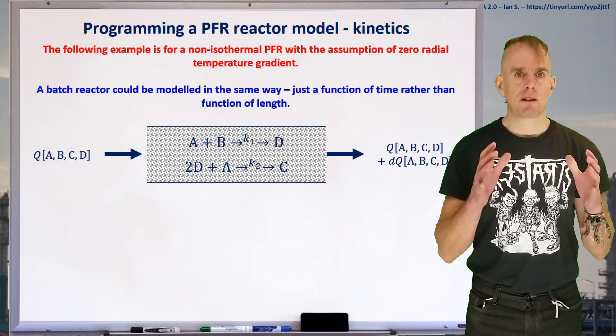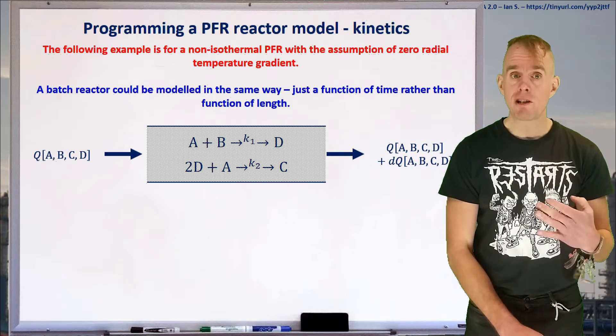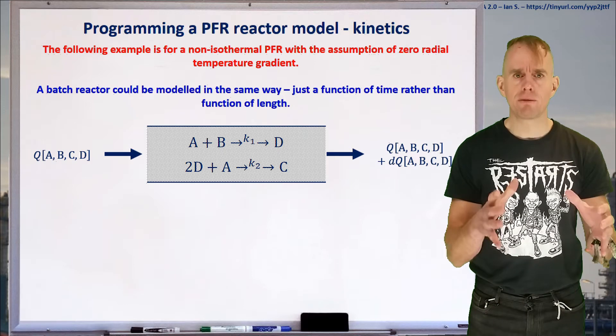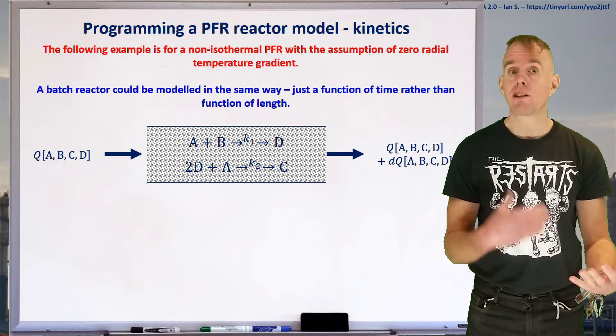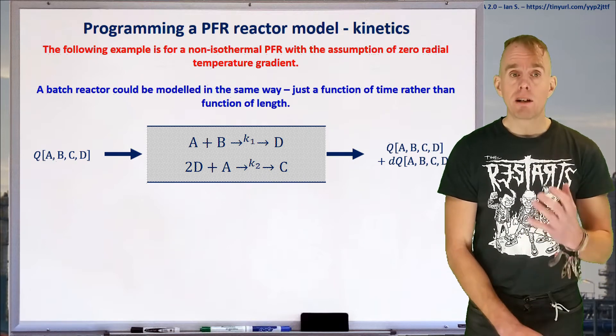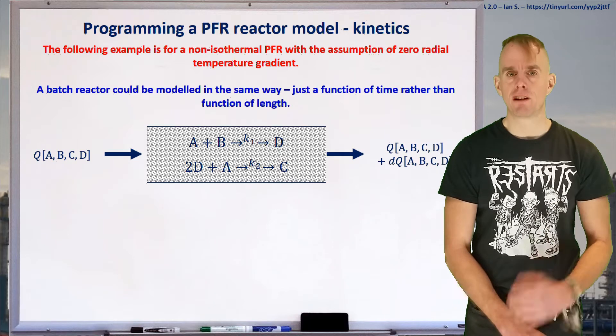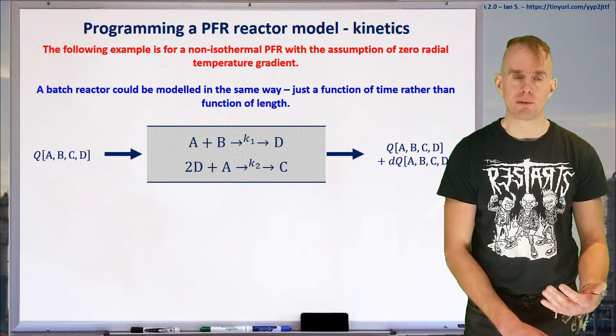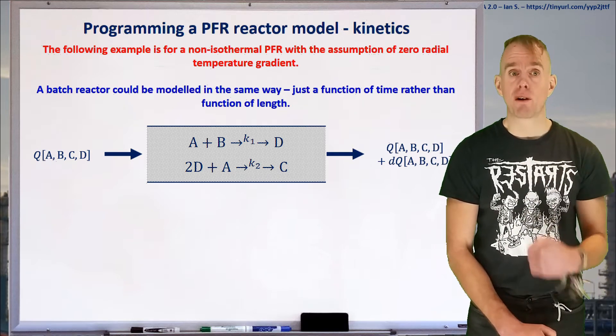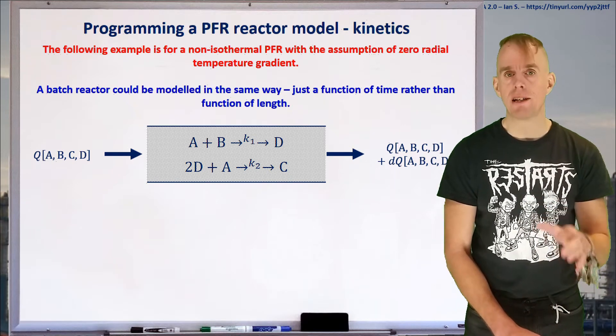If we think about our volumetric slice, coming into it we have a volumetric flow of species—A, B, C and D. Within this volumetric slice we've got some conversion going on. A plus B gets converted to our desired product D according to K1. D unfortunately reacts with A to produce an undesired byproduct C with rate K2. Coming out of the volumetric slice, we have our volumetric flow rates of species changed by a small amount, DQ of A, B, C and D.